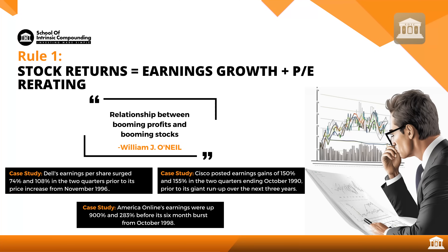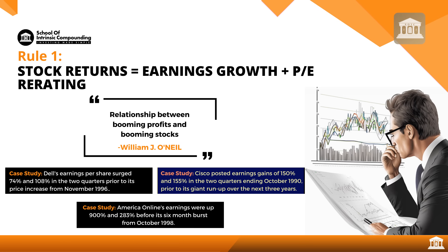He gives case studies in the book: Dell's EPS surged 74% and 108% in two quarters prior to its price increase from November 1996. Cisco posted earnings gains of 150% and 155% in two quarters ending October 1990, prior to its giant run-up over the next three years — the stock went up 30 to 40x. America Online earnings were up 900% and 283% before its six-month burst from October 1998. But how do we identify such companies in India?